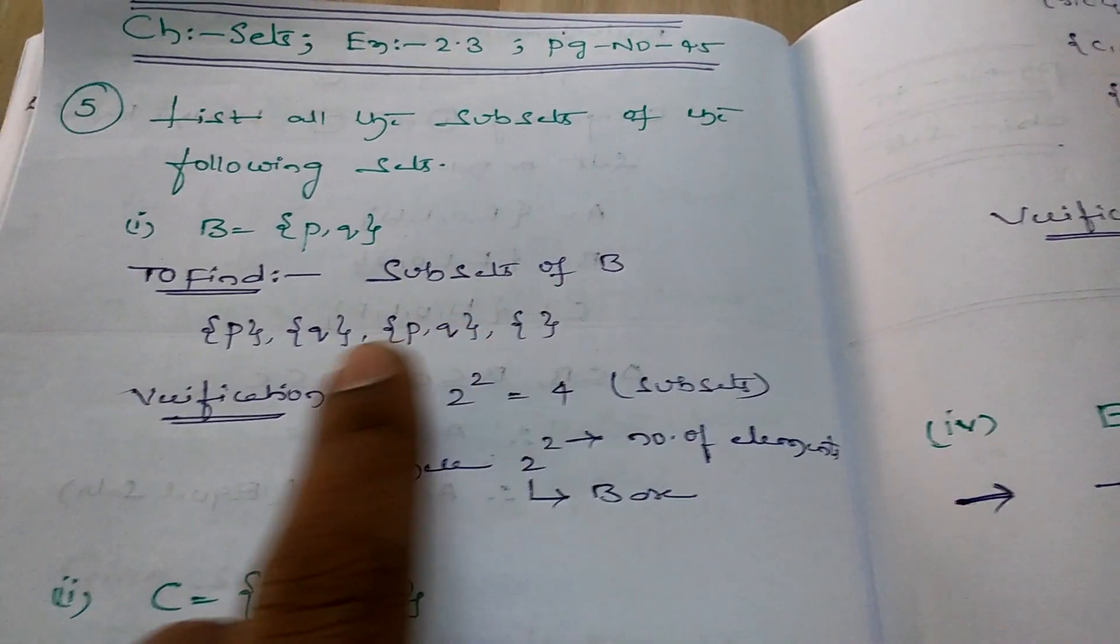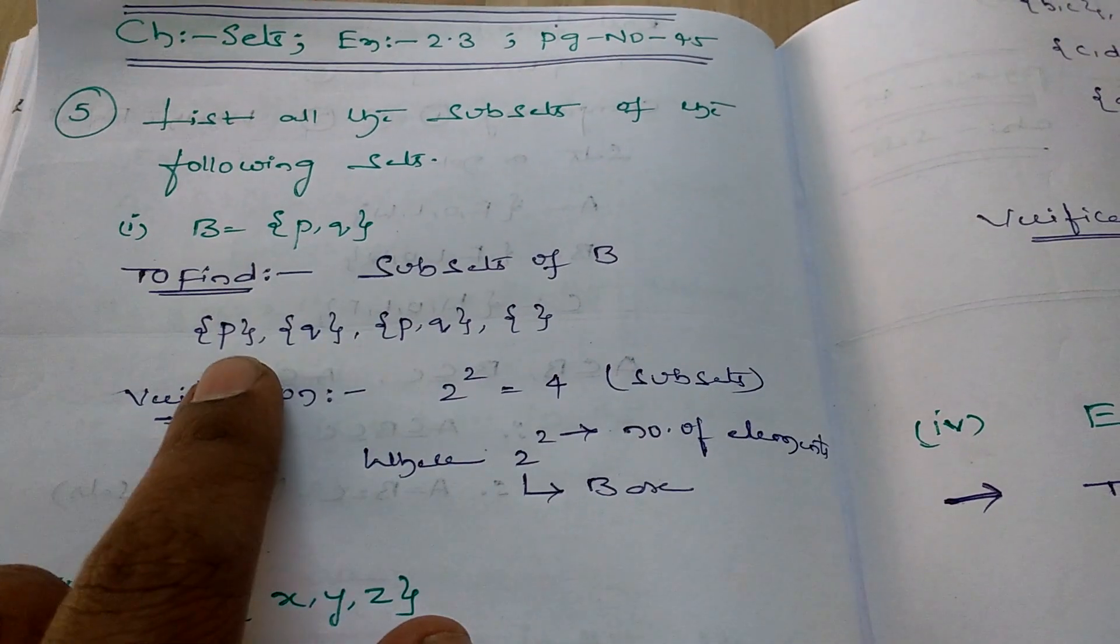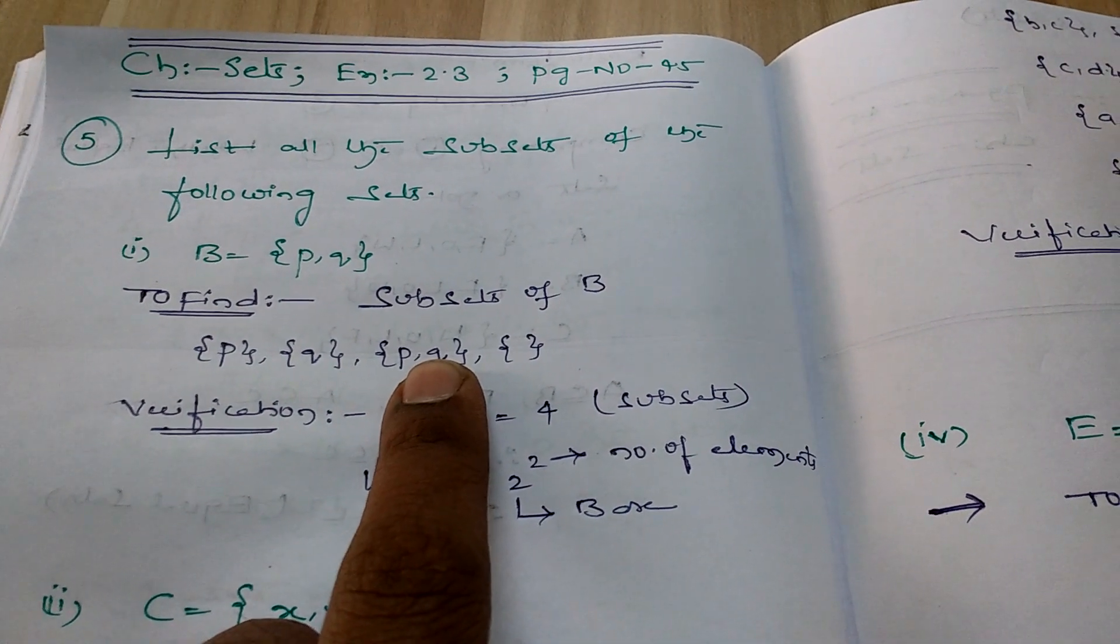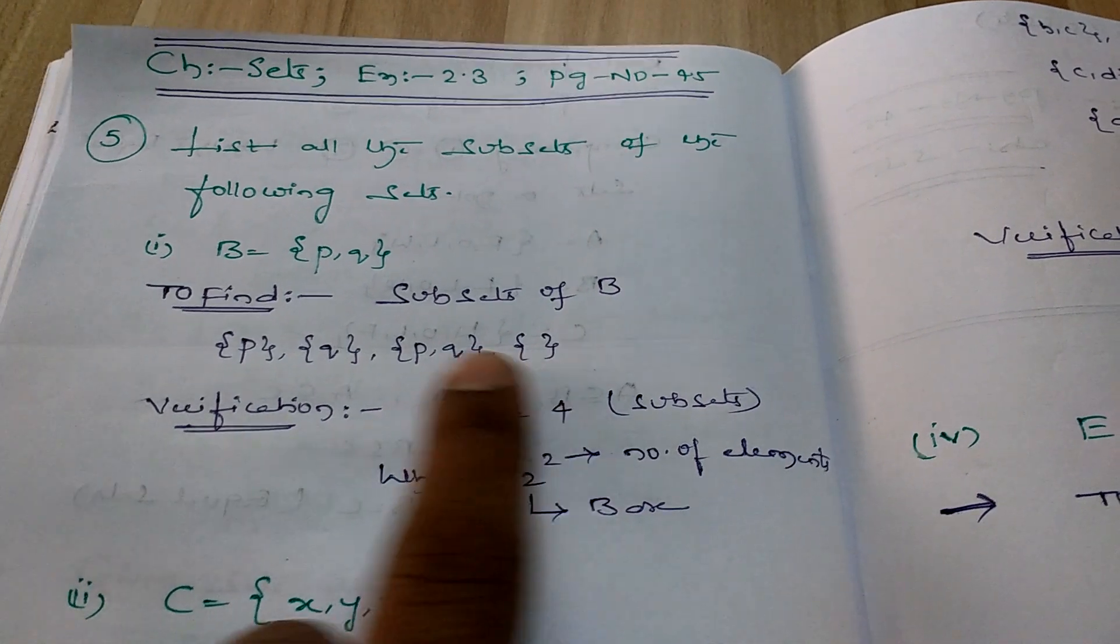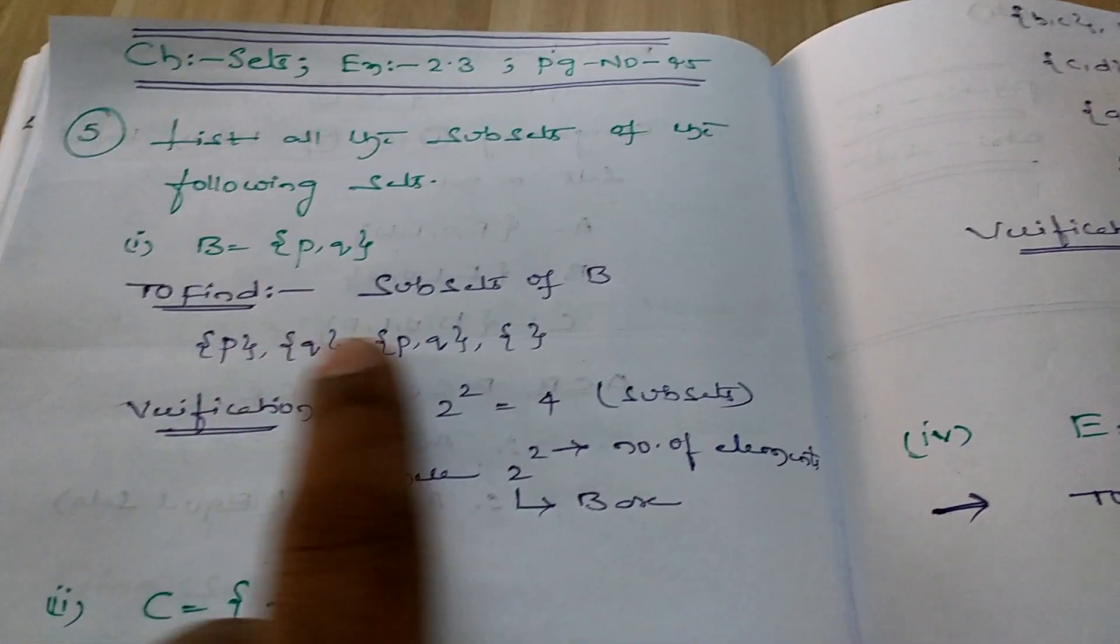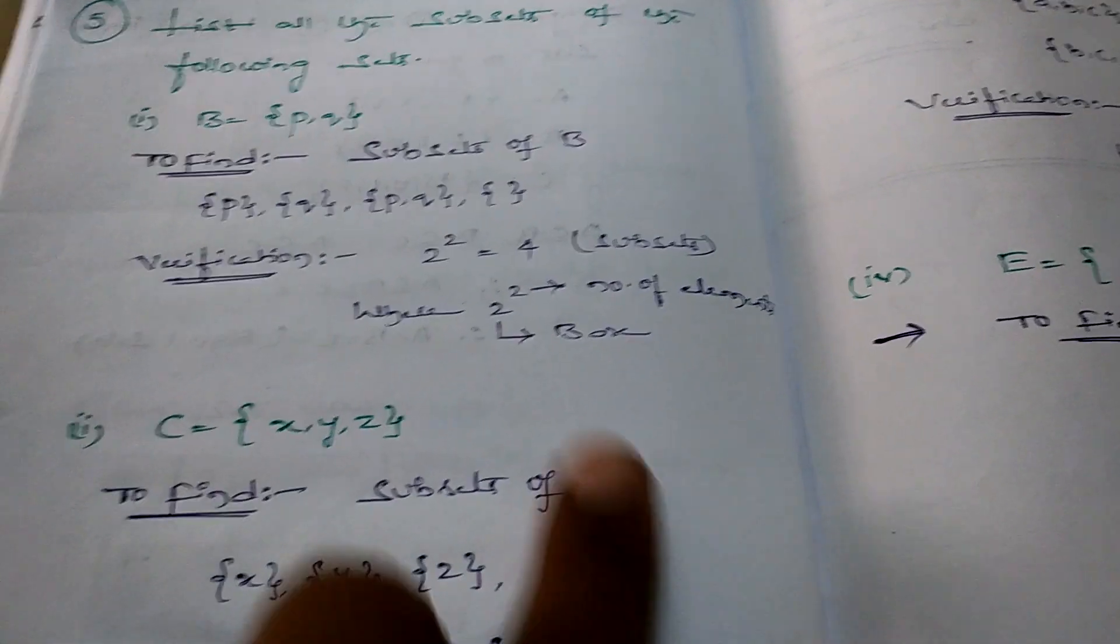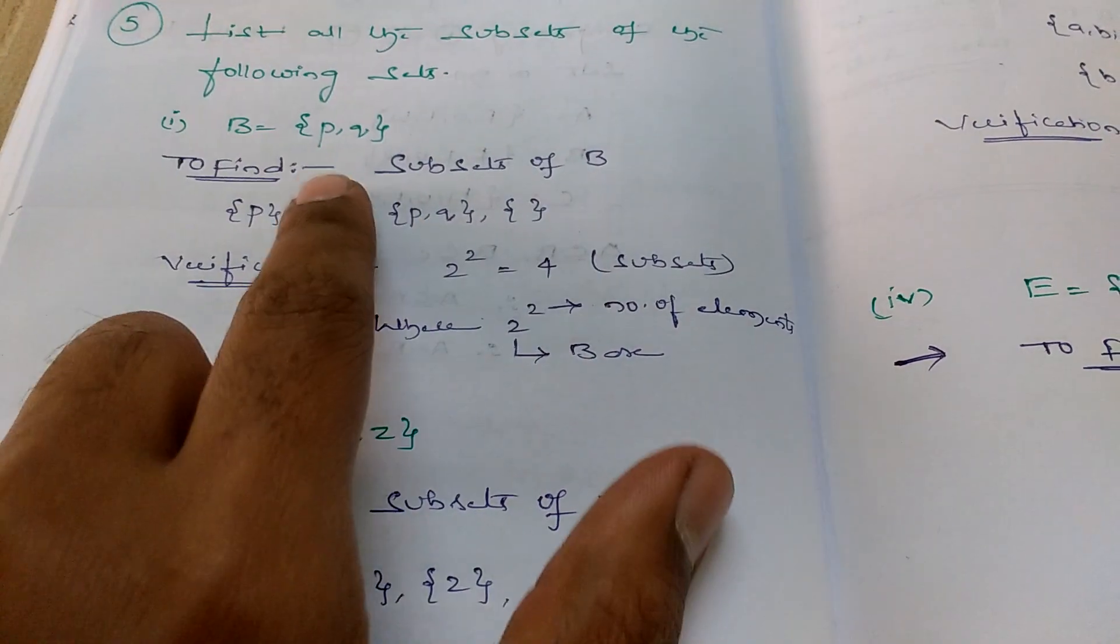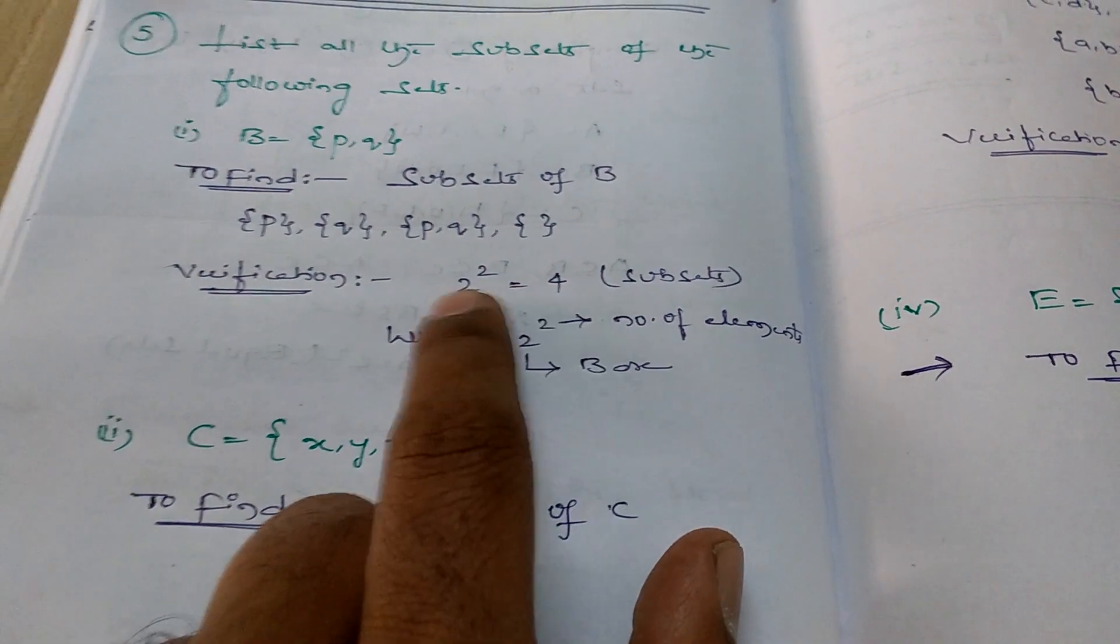So we have to write the subsets of B. For the given set {p, q}, every set is a subset of itself and also the null set is a part of every set. So total we get four subsets. For verification purposes, this is the formula: the base is 2 and the power indicates the number of elements. So we get 2^2 = 4.